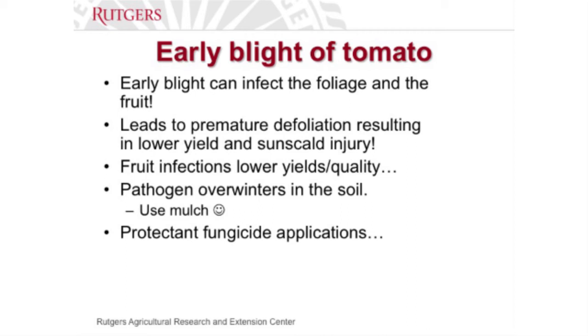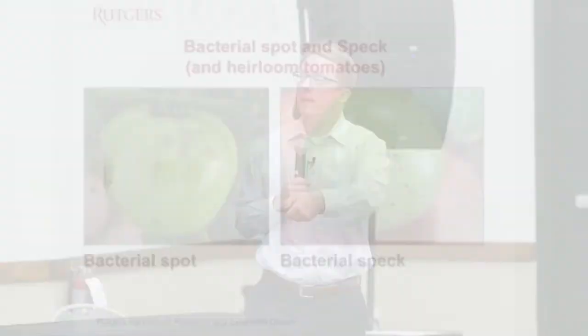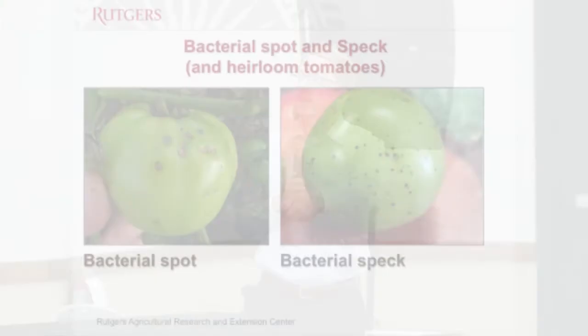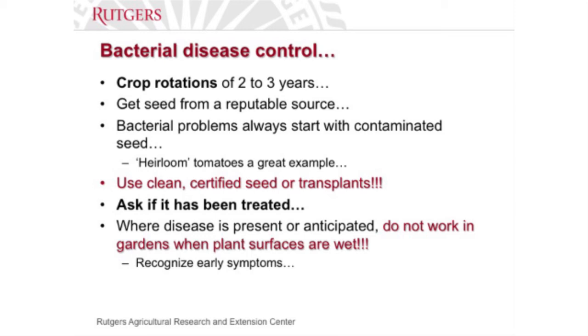Bacterial diseases — how many of you grow heirloom tomatoes? Heirloom tomatoes get every disease under the sun — they're hard to grow. One of the more important issues is that they get all the bacterial diseases. Bacterial leaf spot and bacterial speck show very diagnostic symptoms on infected tomato fruit — once you recognize it, you never forget it. For bacterial disease control, crop rotation of two to three years is key, because the bacteria survives on plant debris that gets rotovated back into the soil. Your seed can actually be infested with bacteria, so buy your seed from a reputable source.